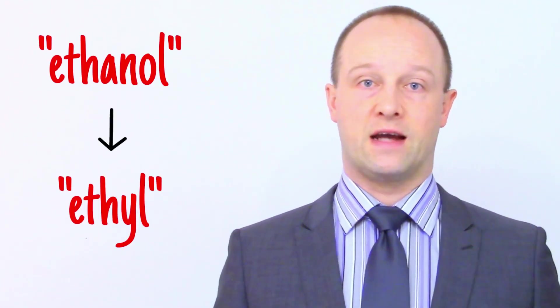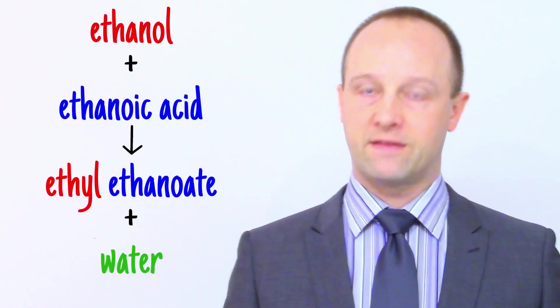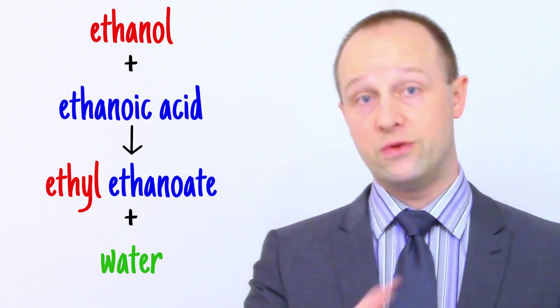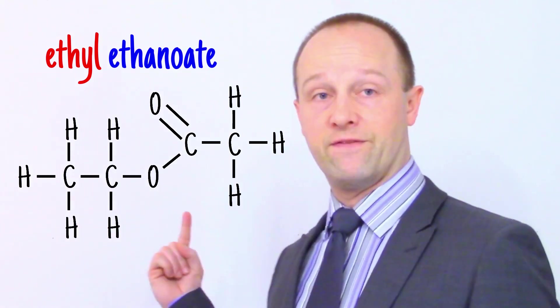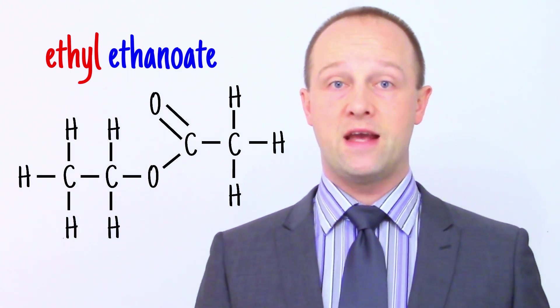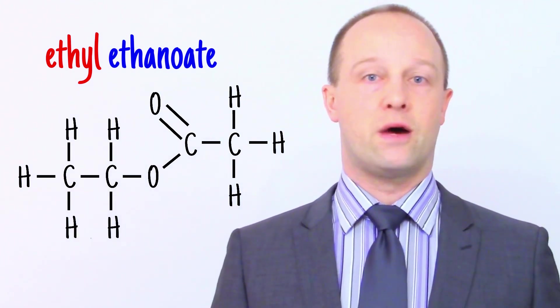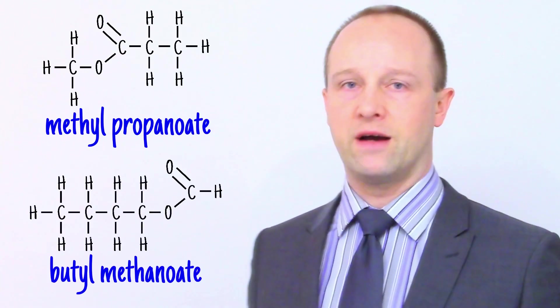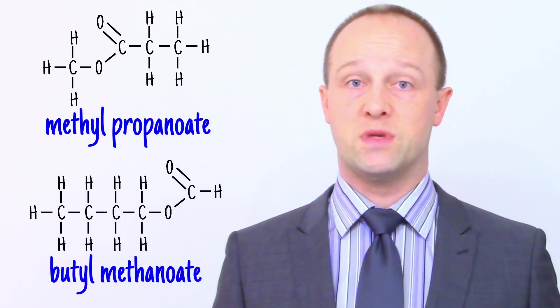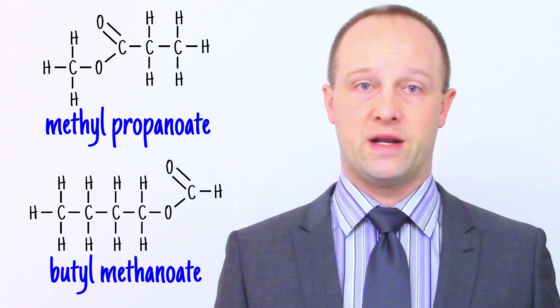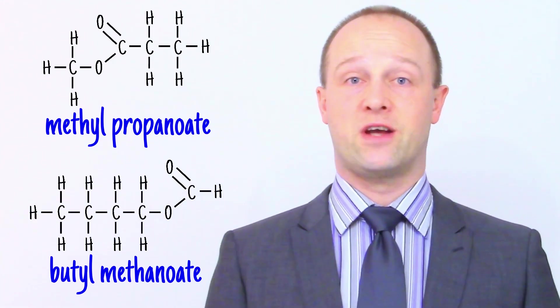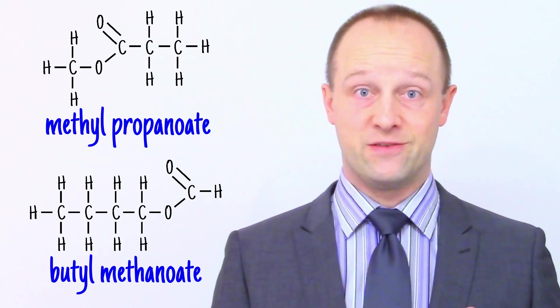If we start with ethanol, the ester's name will start with ethyl. If we add ethanoic acid, the ester's full name will be ethyl ethanoate — this is the only one you need to have heard of. It's got two carbons on the left for 'eth-' and two on the right again for 'eth-', hence ethyl ethanoate. This is the main ester you need to be familiar with at this level, though you could now name and draw a bunch more, like methyl propanoate or butyl methanoate, with chains of carbon atoms spreading out from the same central section each time. As long as you know the name, you know how many carbon atoms to include on each side. That's chemistry — it sounds complicated, but once you know the code, it's actually really easy.